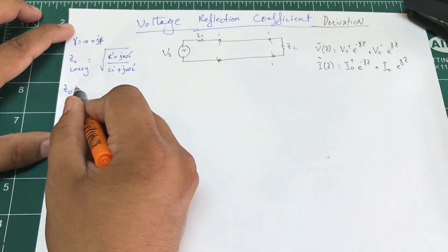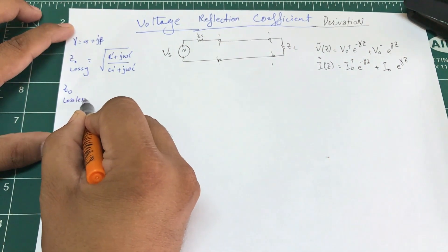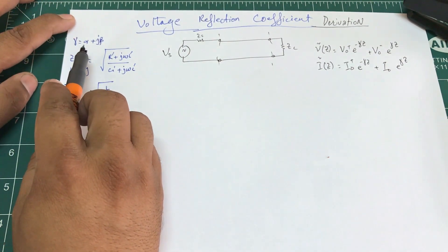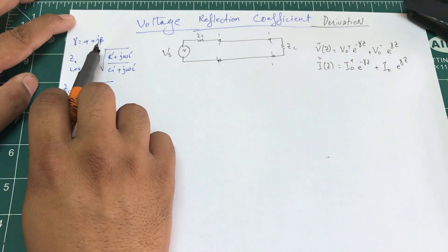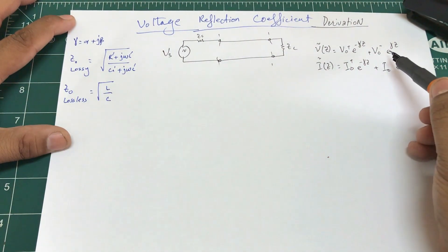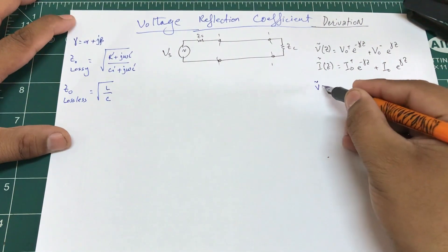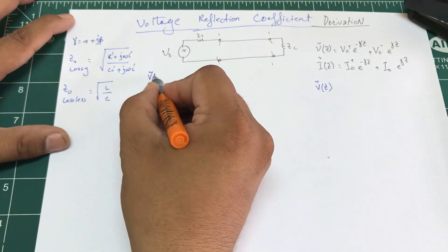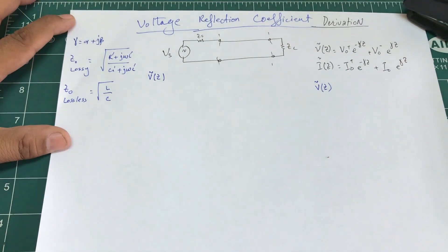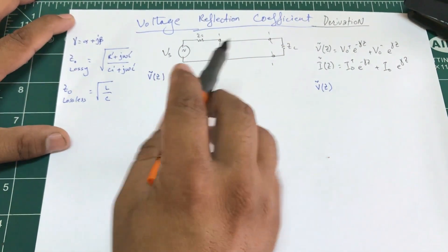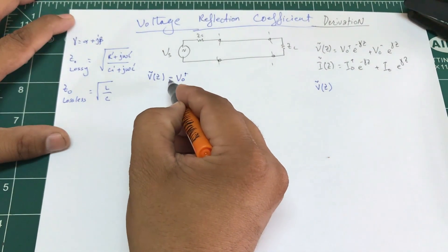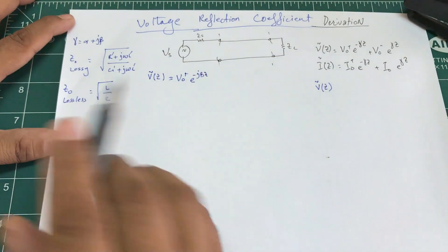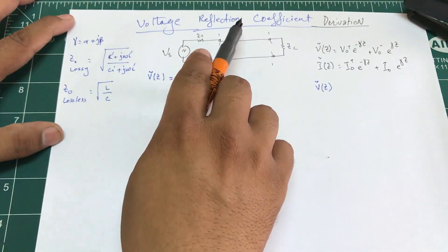Now, for a lossless line where α = 0, Z0 simplifies to just sqrt(L/C). This means the attenuation constant is not present, only jβ remains. So we're going to rewrite the voltage equation as v(z) = V0+ * e^(-jβz),